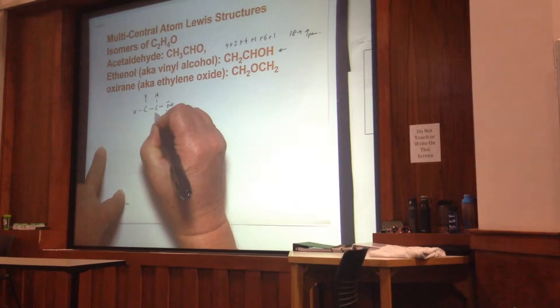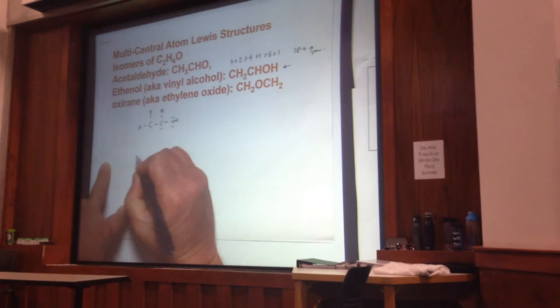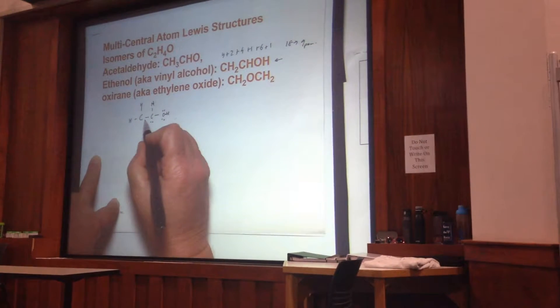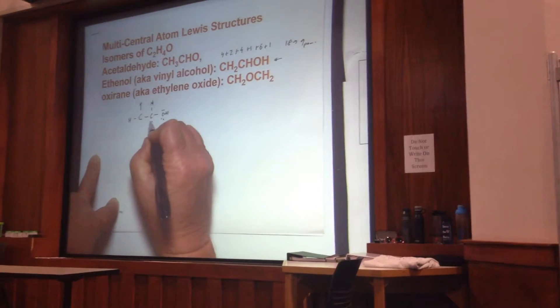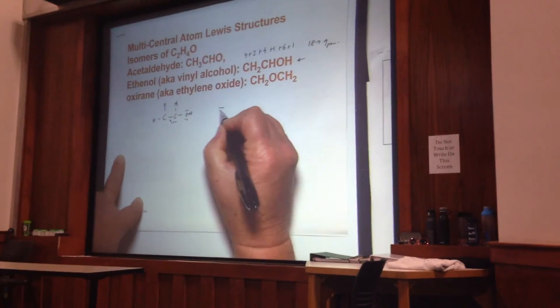7, 8. We put the ninth one there that takes a couple of electrons. You see that leaves this carbon here without its filled octet. So basically we end up with a double bond.